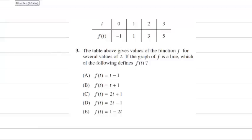Here's a problem from College Board's 2004 practice test. The table gives values of the function f for several values of t. If the graph of f is a line, which of the following defines f(t)? So for which of these functions, when I plug in 0, do I get negative 1, and the rest of the choices?